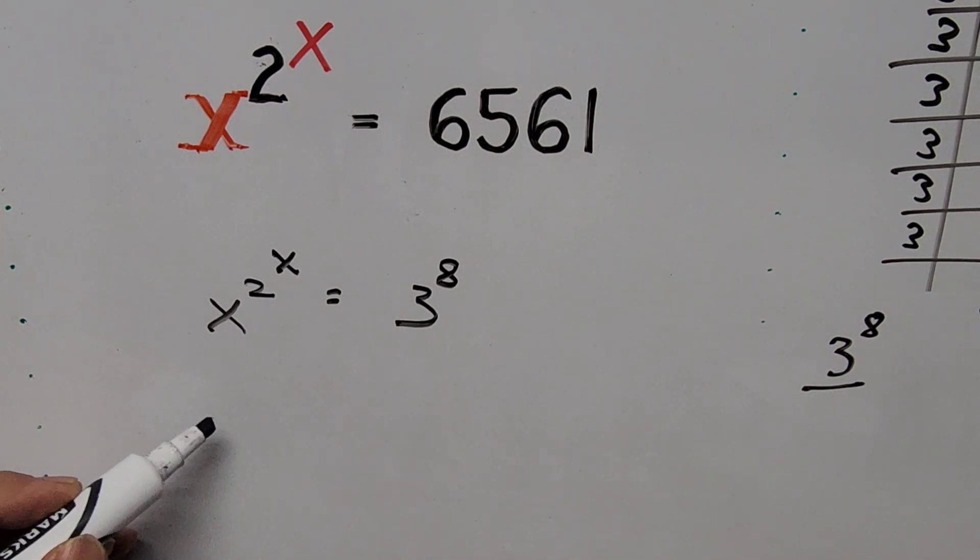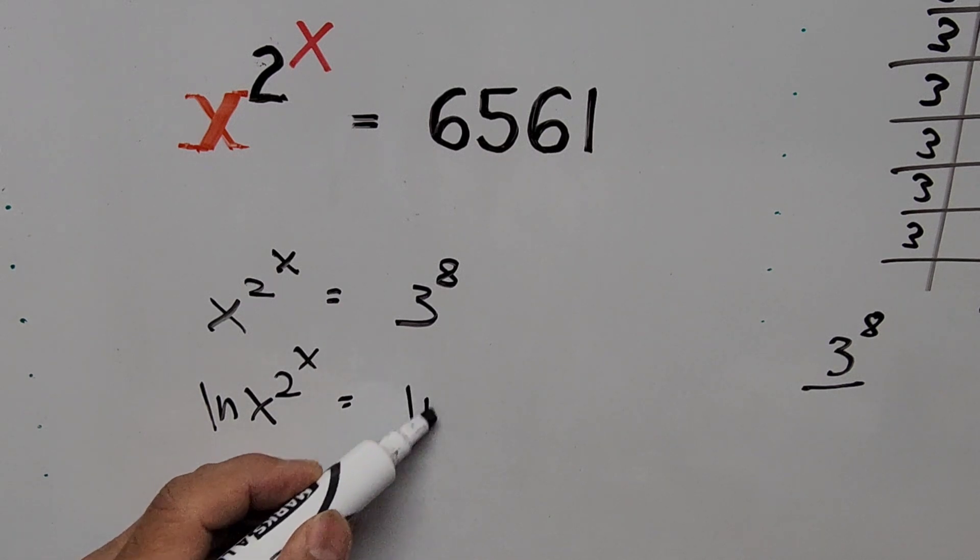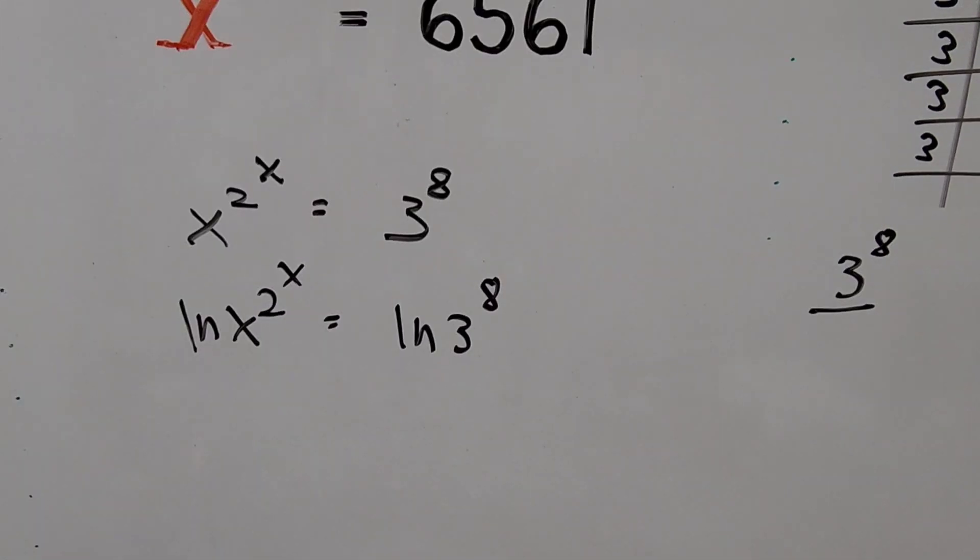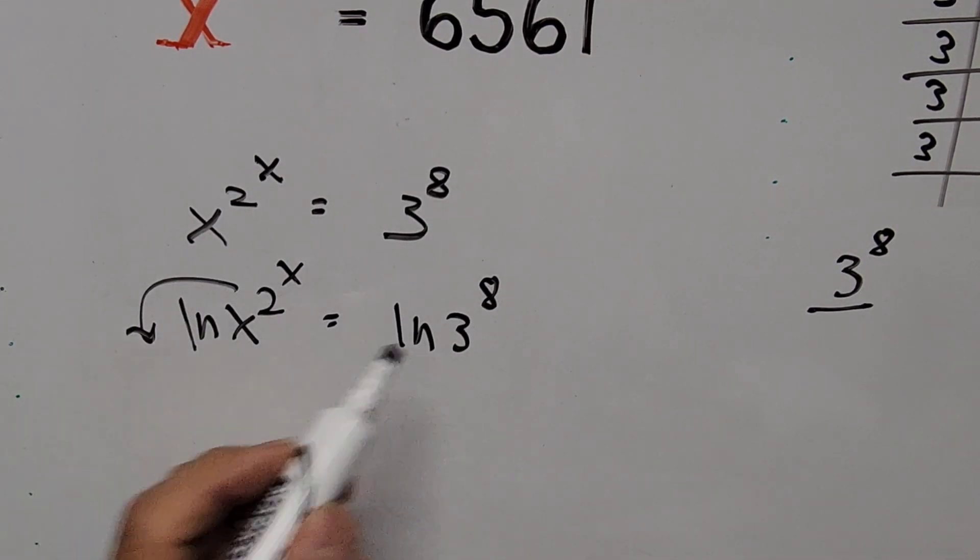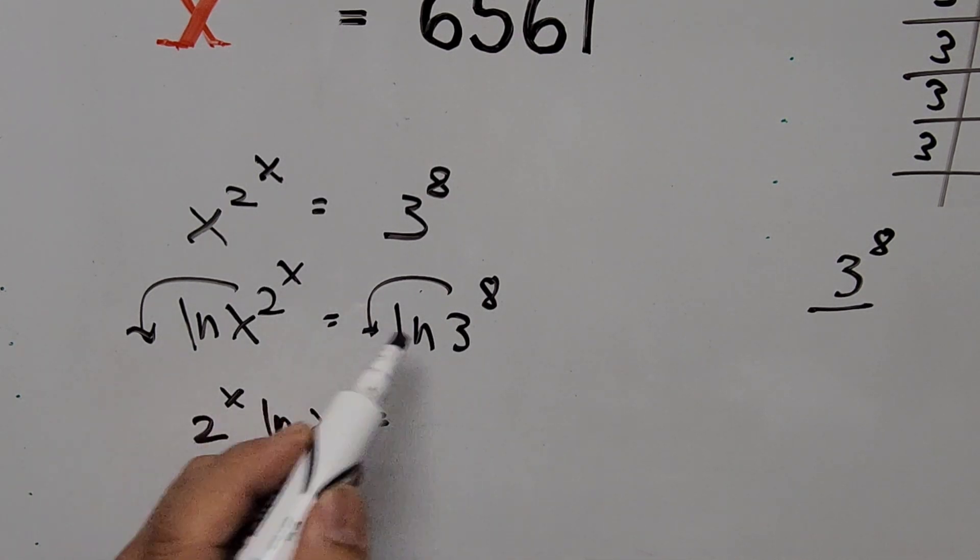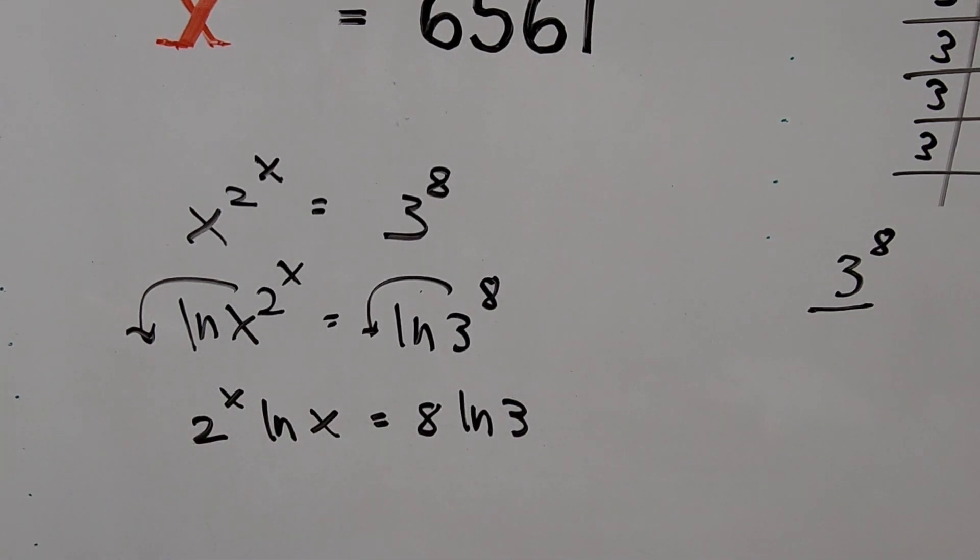This is now ln of x to the power of 2 to the power of x equals ln of 3 to the power of 8. Now we're taking down the exponent, the same thing on here. So the equation now becomes 2 to the power of x times ln of x equals 8 times ln of 3.